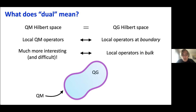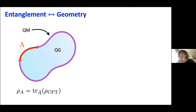This is precisely the sense in which the quantum mechanical theory — this purple line — lives at the boundary of the quantum gravity theory, the blue bulk. In principle, because this is a duality, I can also map operators in the bulk of my gravity theory into the boundary quantum mechanical theory. In some instances it's known how to do this, but in general this is a much more subtle, difficult, and interesting focus of research.